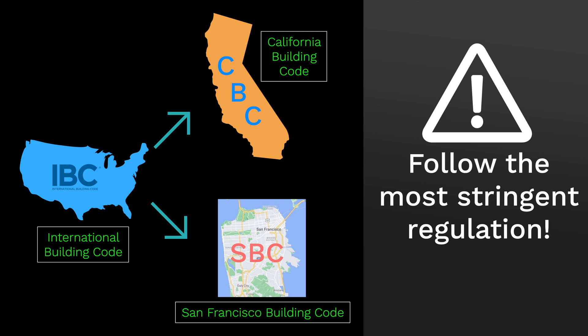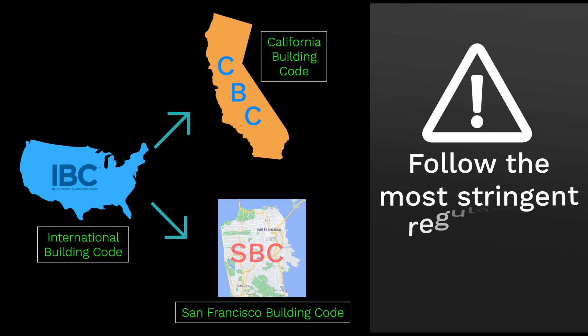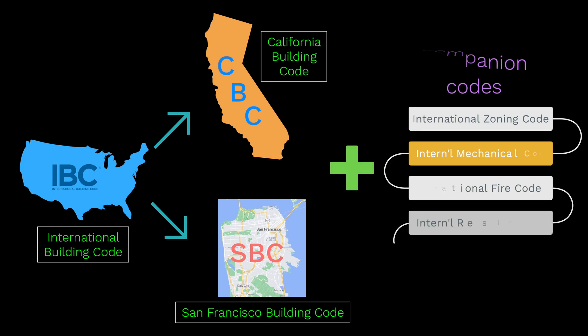This way is a good rule of thumb to ensure you pick the safest option for the building occupants. There are also companion codes that you can use to complement the building codes you're using, such as the International Zoning, Mechanical, Fire, and Residential Codes.